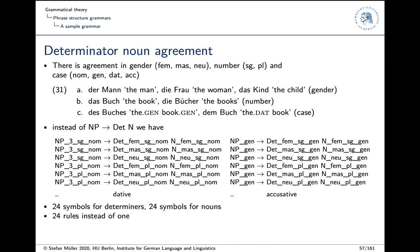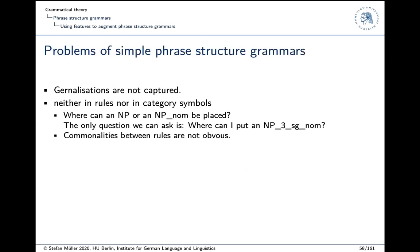So instead of our simple rule NP goes to determiner and noun, we have six rules for nominative, six for genitive, six for dative, six for accusative. So that means 24 symbols for determiners, 24 symbols for nouns and 24 rules instead of one. There's, on top of this, there's the credential class in German. So it would be 48 rules. There are just two, but if you do it cleverly, but you have to have them in all the rules and that's obviously not correct.